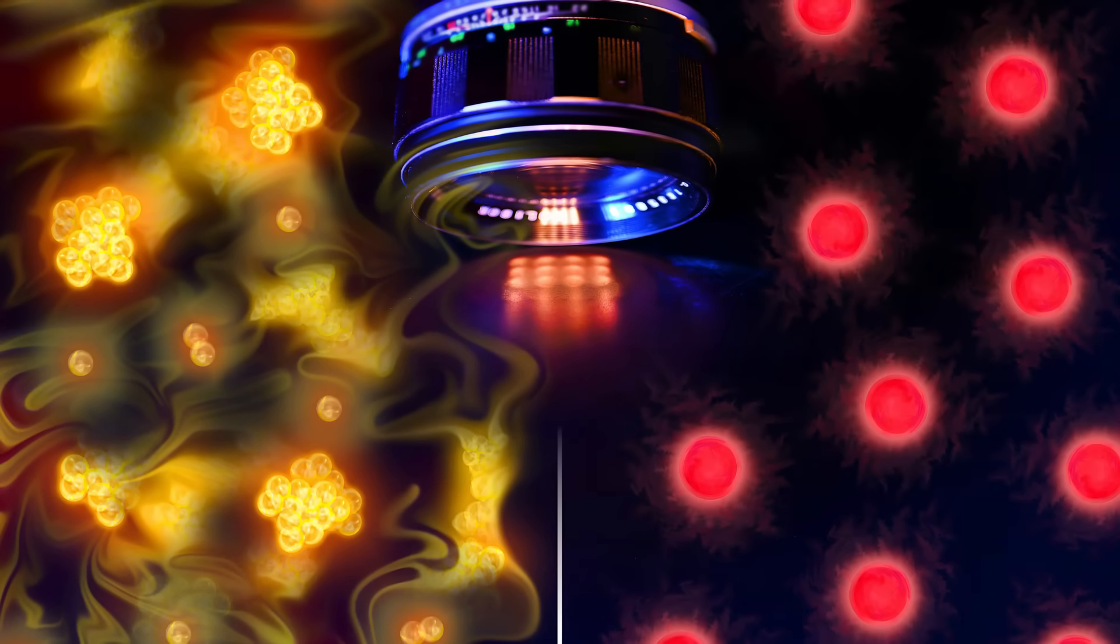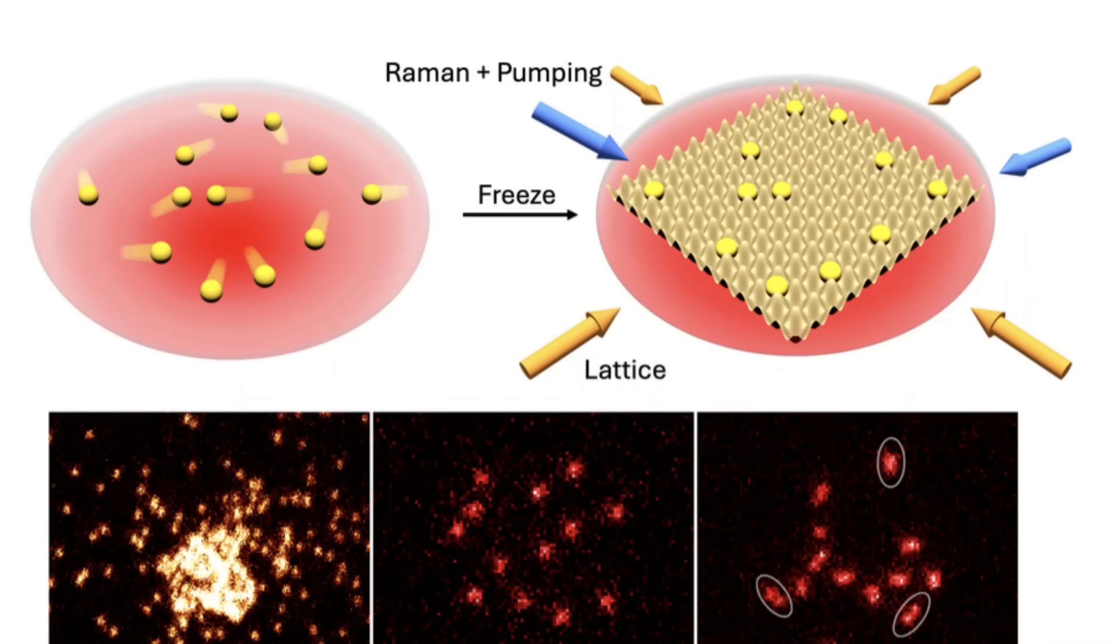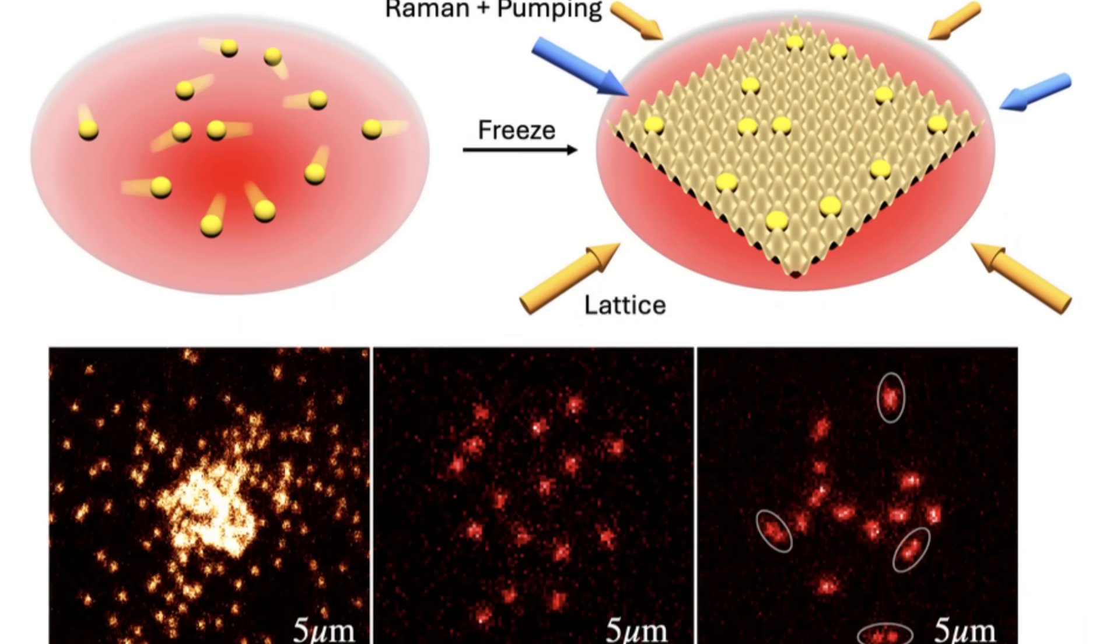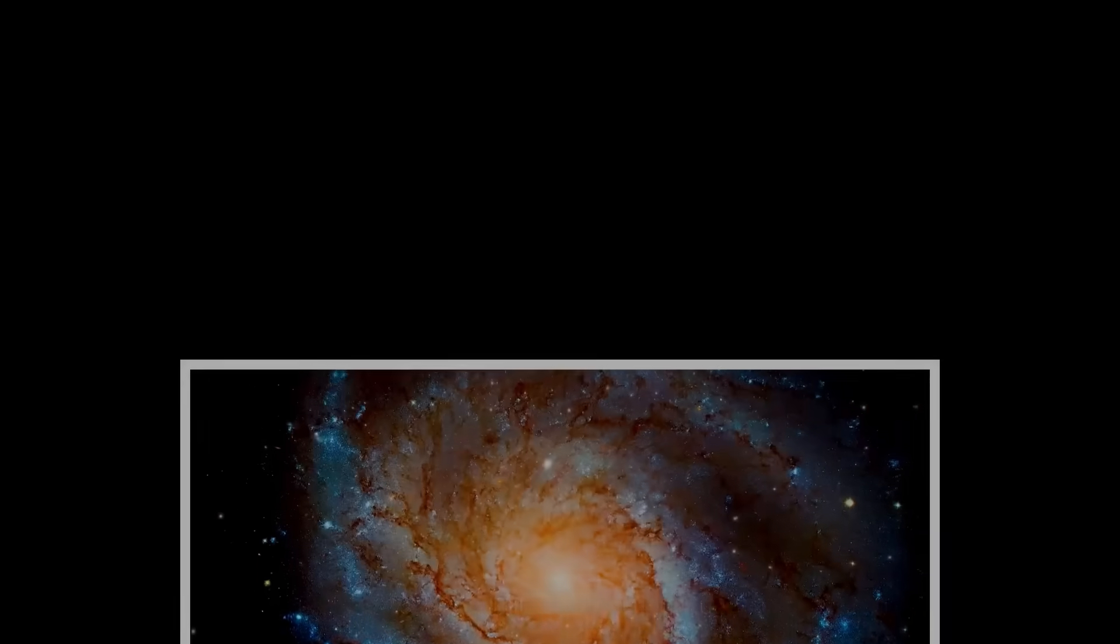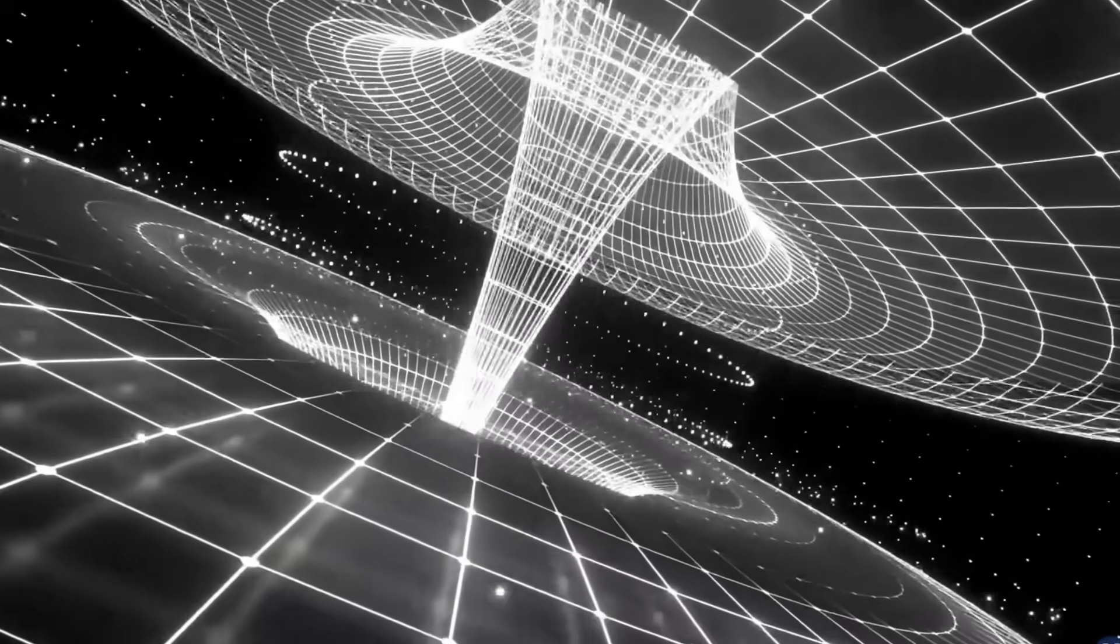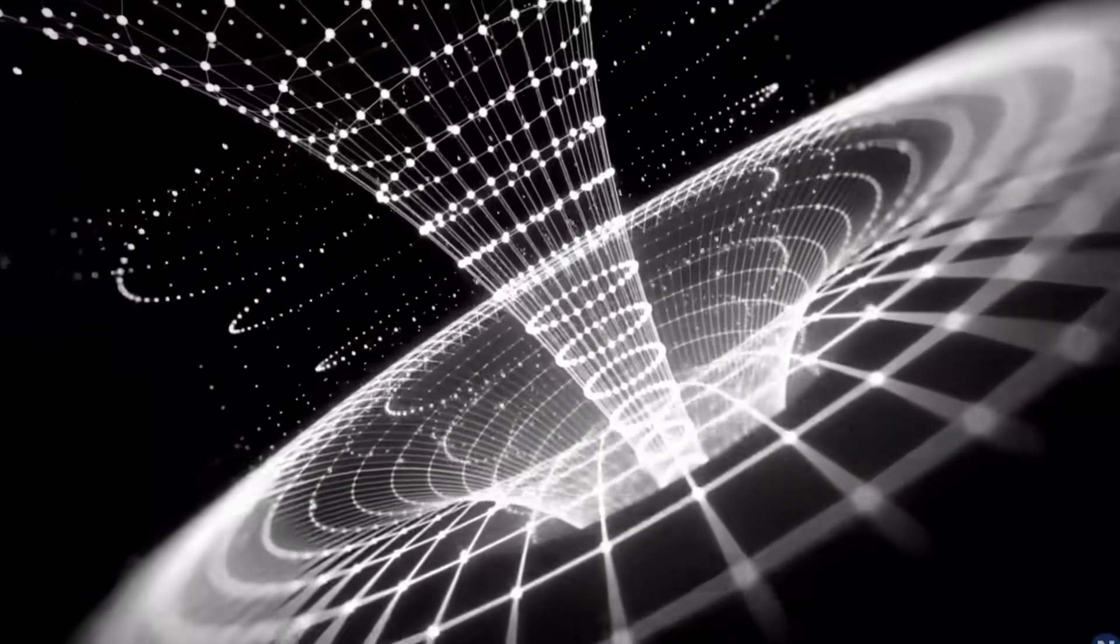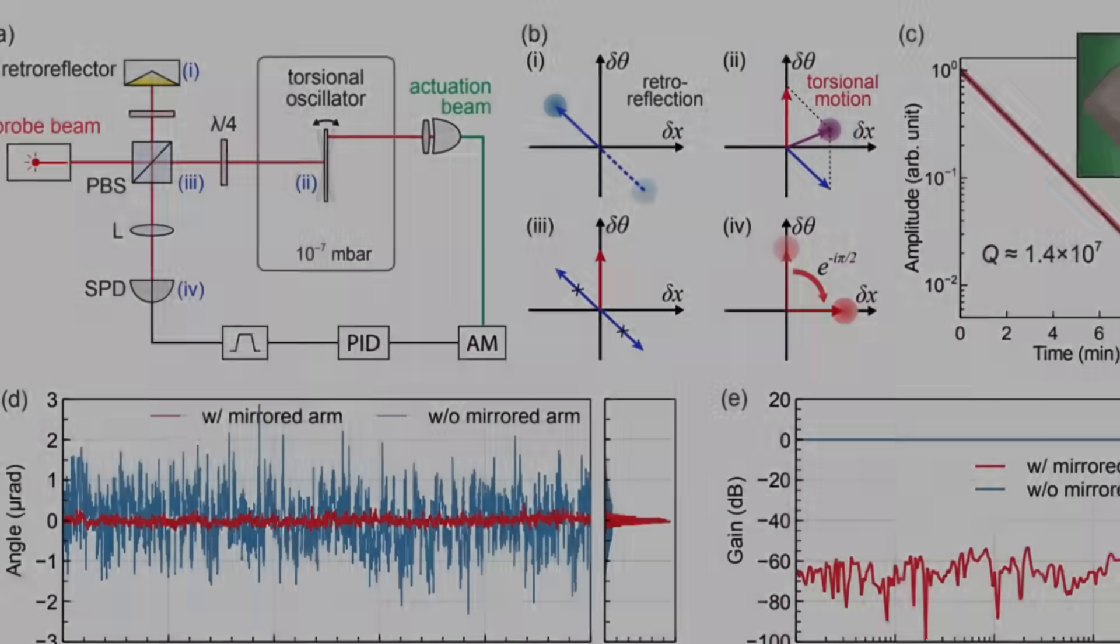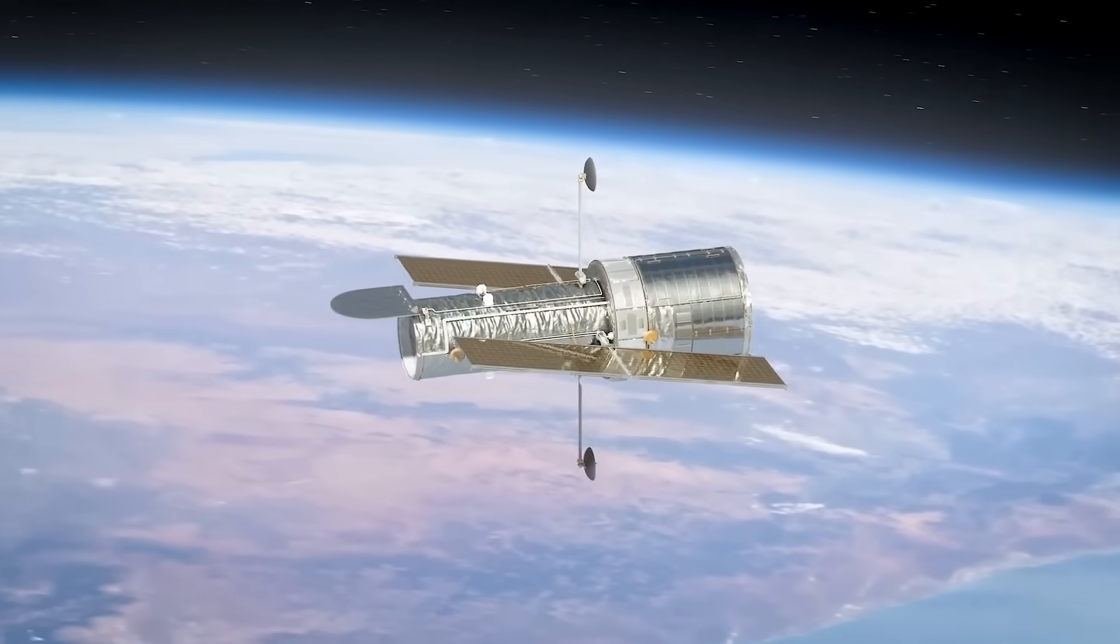The instruments being developed at MIT use ultra-cold atoms in free fall to measure gravity with astonishing precision. When atoms encounter different gravitational pulls, they create interference patterns, like ripples in a pond. But during this anomalous reading, those patterns showed something unprecedented.